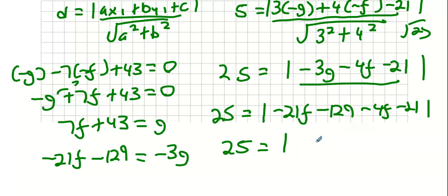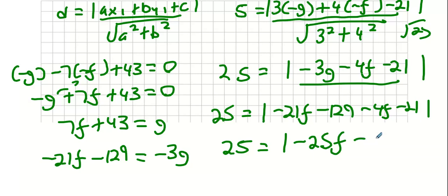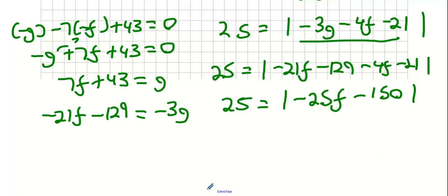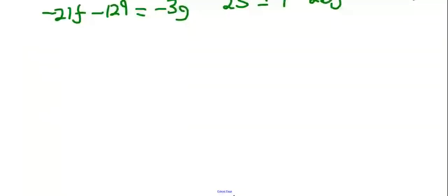Combining terms: minus 4f and minus 21f gives minus 25f, and minus 129 minus 21 gives minus 150. So we have 25 equals minus 25f minus 150. Now I'm going to square out both sides.